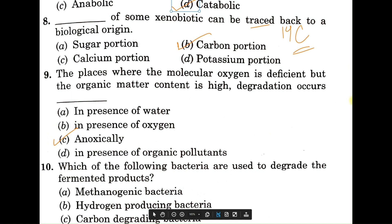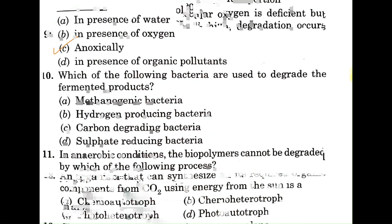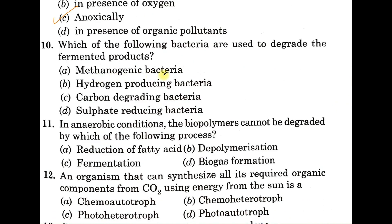Question number ten: which of the following bacteria are used to degrade fermented products? A: methanogenic bacteria, B: hydrogen-producing bacteria, C: carbon-degrading bacteria, D: sulfate-reducing bacteria. The correct answer is A, methanogenic bacteria. These bacteria degrade simple single-carbon compounds like acetate, ultimately producing methane.